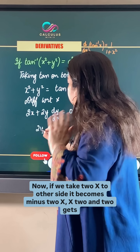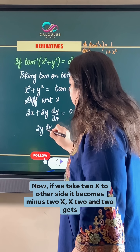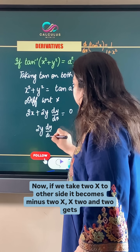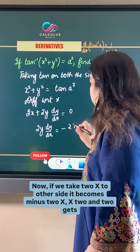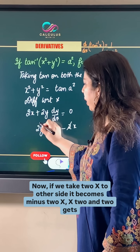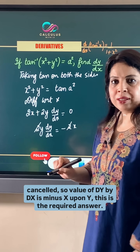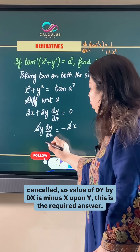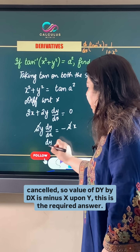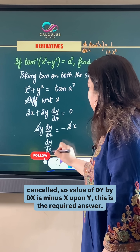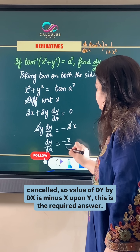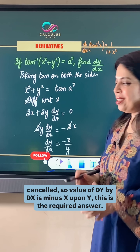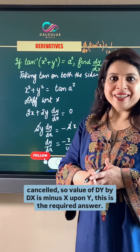If we take 2x to the other side it becomes −2x. The 2s cancel, so the value of dy/dx is −x/y. This is the required answer.